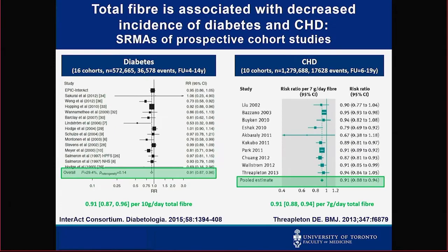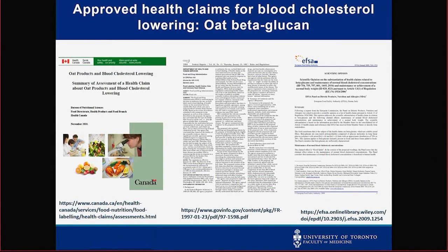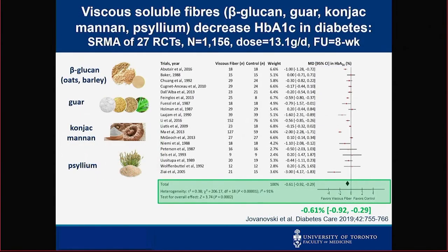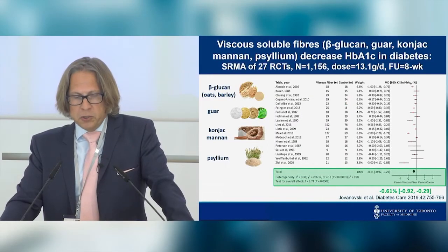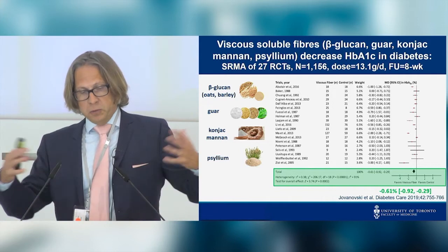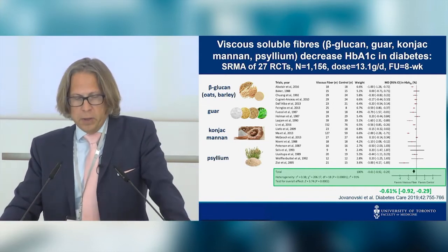For dietary fiber, prospective cohort evidence again shows higher intakes associated with lower risk for diabetes and heart disease. We have health claims — in Canada, the US FDA, and the European Food Safety Authority — for oat beta-glucan, barley beta-glucan, and psyllium. A recent meta-analysis we were part of showed that it's really the sticky viscous fibers that show the metabolic effects, though epidemiology shows effects for total fiber.